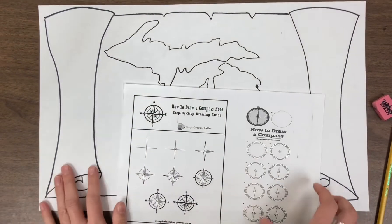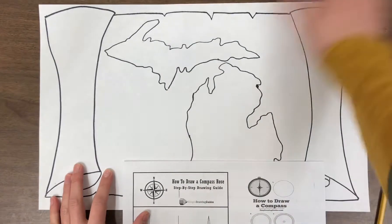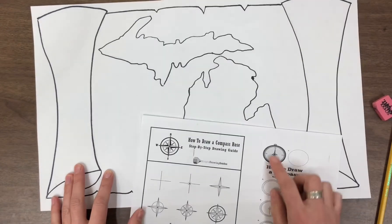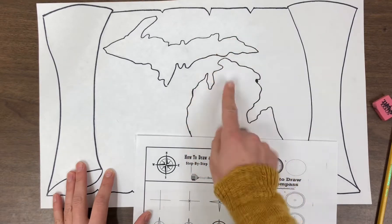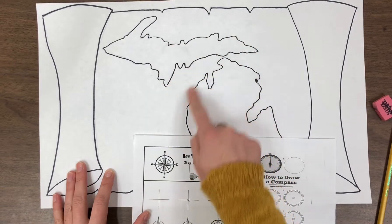All right friends, our next step on our map of Michigan is to add a compass. A compass tells us the direction. So we know Michigan is, this is north, right? Because we know this is up north Michigan.